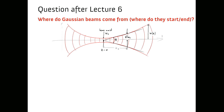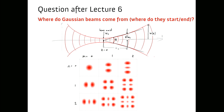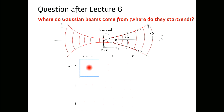I got a great question from Jess after lecture six: where do Gaussian beams come from? Where do they start and end? Any beam can be decomposed into Laguerre-Gauss modes. For anything that looks mostly like a blob, the TEM00, the lowest-order Gaussian mode, will dominate. If you've made a beam from a laser or light bulb, you have some spot size and some wavefront curvature, and those two things uniquely determine the Gaussian beam.